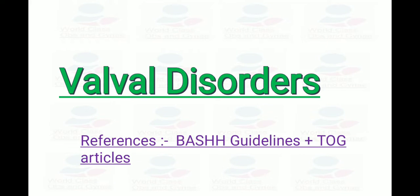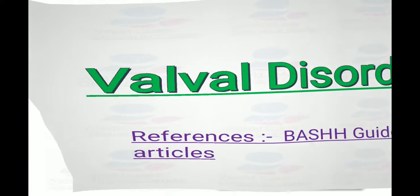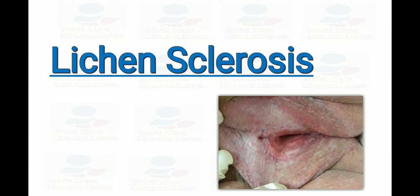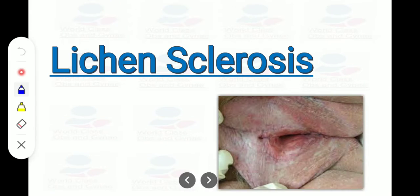Vulval disorders from BASCH guideline and TOG articles will be our point of discussion today. We have several vulval disorders and many exam questions come related to these topics. In the picture you can see lichen sclerosis, showing pale atrophic areas with white plaques, fissuring, erosion, and a little loss of architecture.